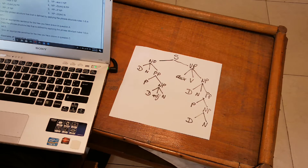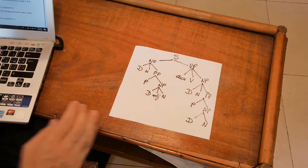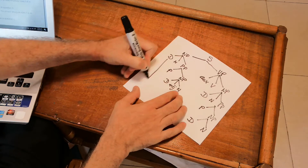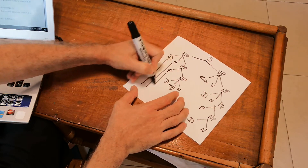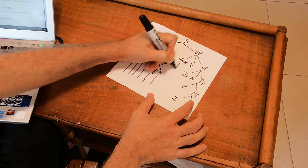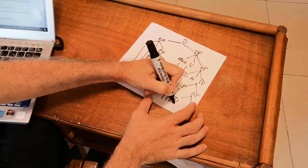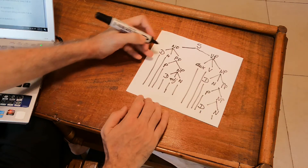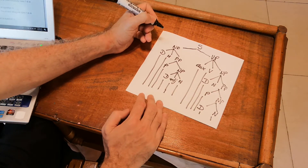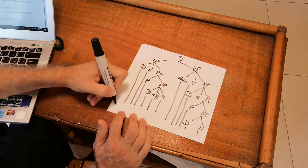Now let's read what B says. B says: give an appropriate sentence for the tree you have drawn in question A. So I'm supposed to write a sentence here that matches my tree. This is the part where you need to use your imagination.